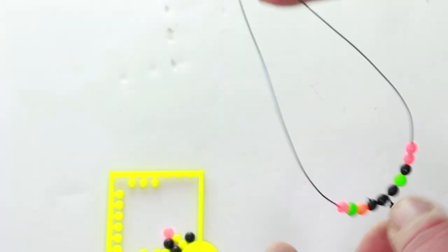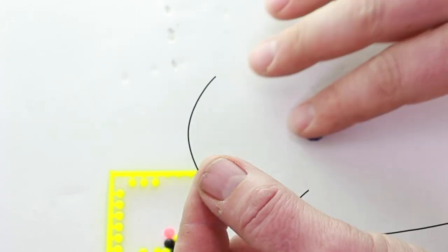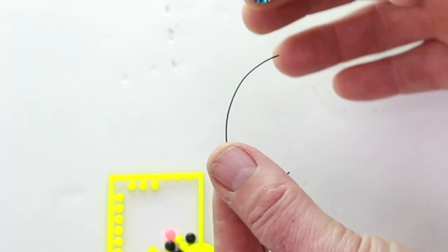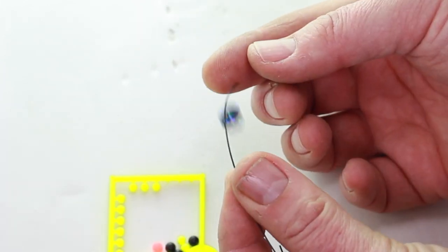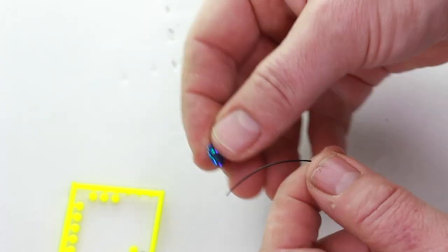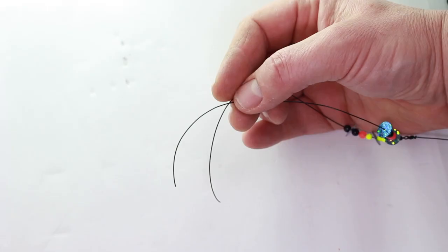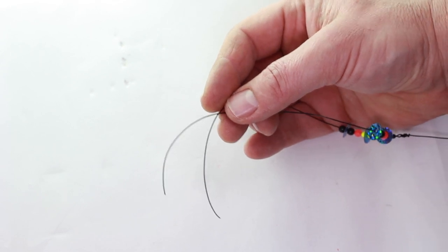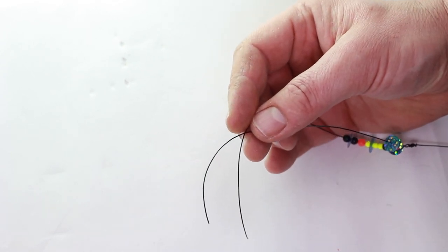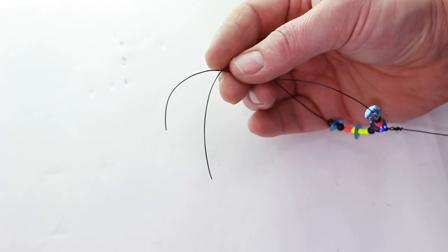So with a swivel in the middle, just put your beads on as you want. Some people say red beads, some people say black. Does it matter? I don't know. One for the comments, I think. As long as it's equal either side of the swivel, so you've got the same amount of beads and sequins on either side.